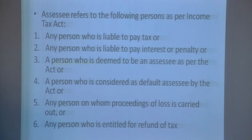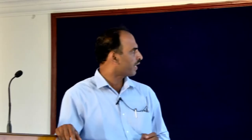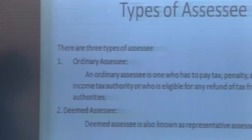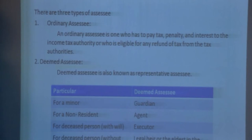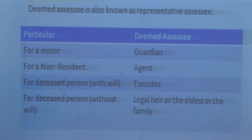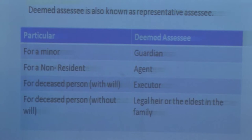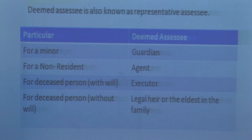Types of assessee: assessees are classified into three categories. The first is an ordinary assessee — one who has to pay tax, penalty, and interest to the income tax authority, or who is eligible for any refund of tax. The second is a deemed assessee, also known as a representative assessee. For example: for a minor, the guardian is the deemed assessee; for a non-resident, the agent is the deemed assessee; for a deceased person with a will, the executor is the deemed assessee.